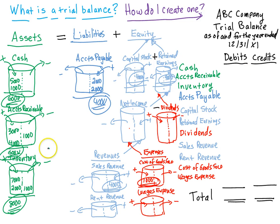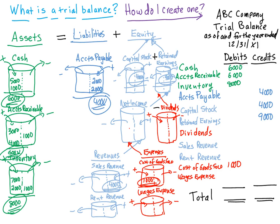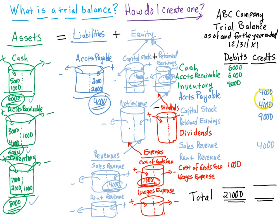We take these balances and put them on the trial balance, hoping that debits match credits. I'm entering all the numbers — cash, receivables, inventory, accounts payable, capital stock, retained earnings, sales revenue, cost of goods sold — and checking them off to make sure everything made it over. If it's out of balance, that may be a sign that you didn't get everything. Adding it up: debits total $21,000, credits total $21,000. We've just created a trial balance.